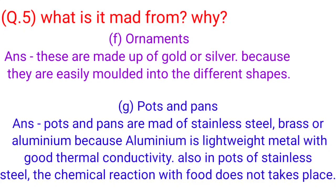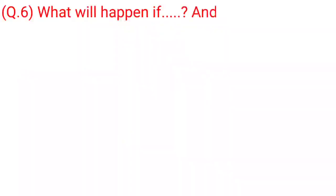Answer: Pots and pans are made of stainless steel, brass, or aluminum because aluminum is a lightweight metal with good thermal conductivity. Also, in pots of stainless steel, the chemical reactions with food do not take place.